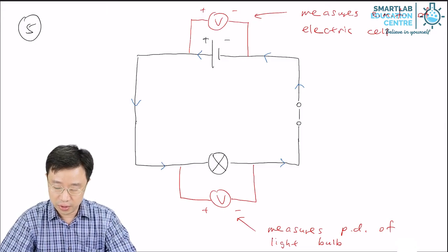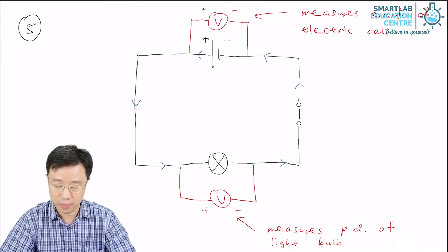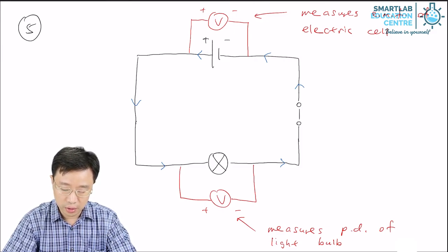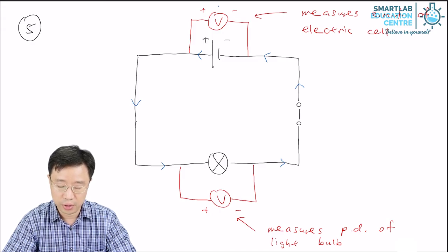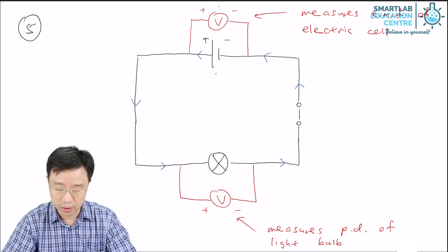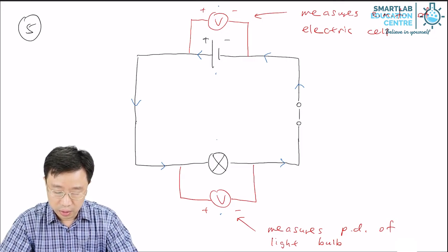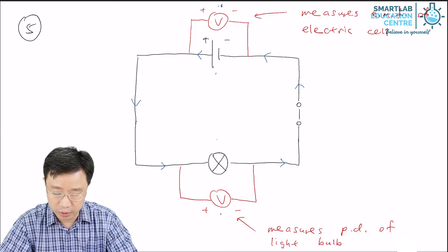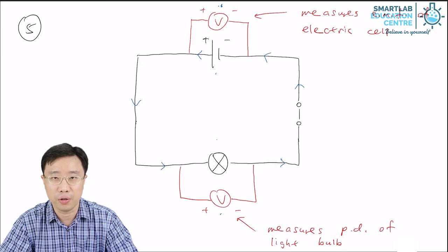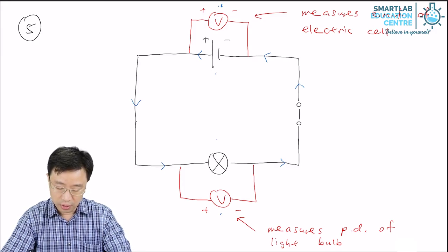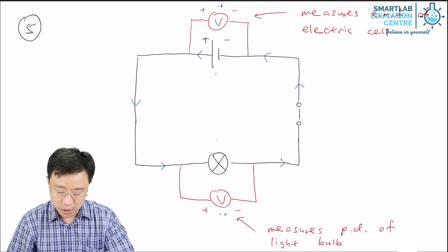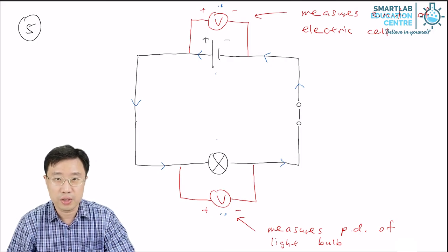As you can see in this diagram, we have two voltmeters. This one is connected across the electric cell, and this one is connected across the light bulb. The one connected across the electric cell measures the voltage of the electric cell — that is the EMF of the electric cell. The one connected across the light bulb measures the voltage — that is the PD of the light bulb.